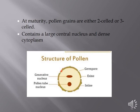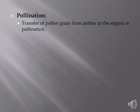In this figure there is a structure of a pollen grain showing the outer and inner wall. You can observe the exine, and inner to the exine is the intine. The exine contains several thin areas known as germ pores from where the pollen tube emerges. This was the general morphology and structure of a pollen grain.